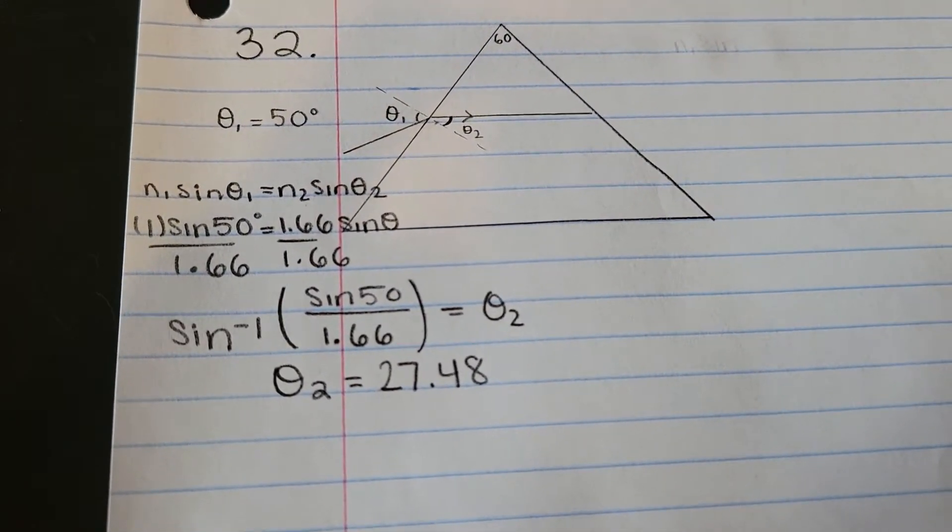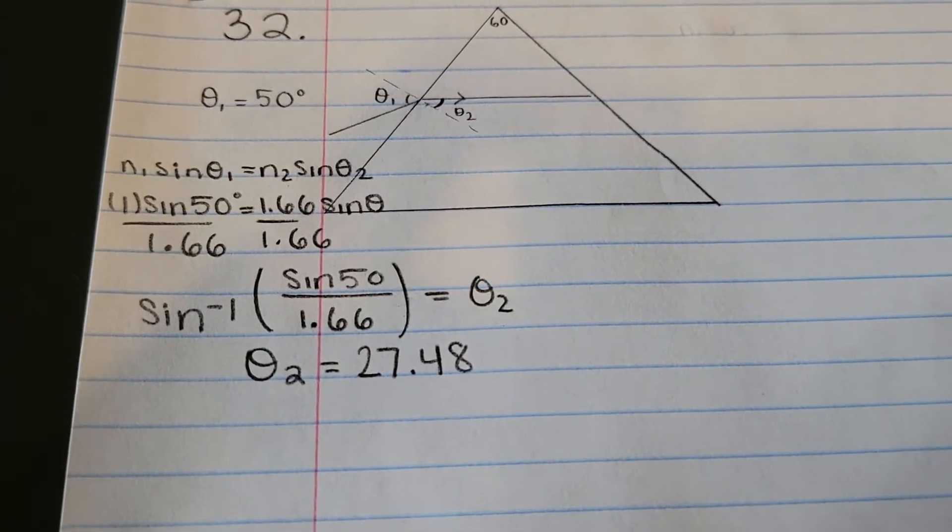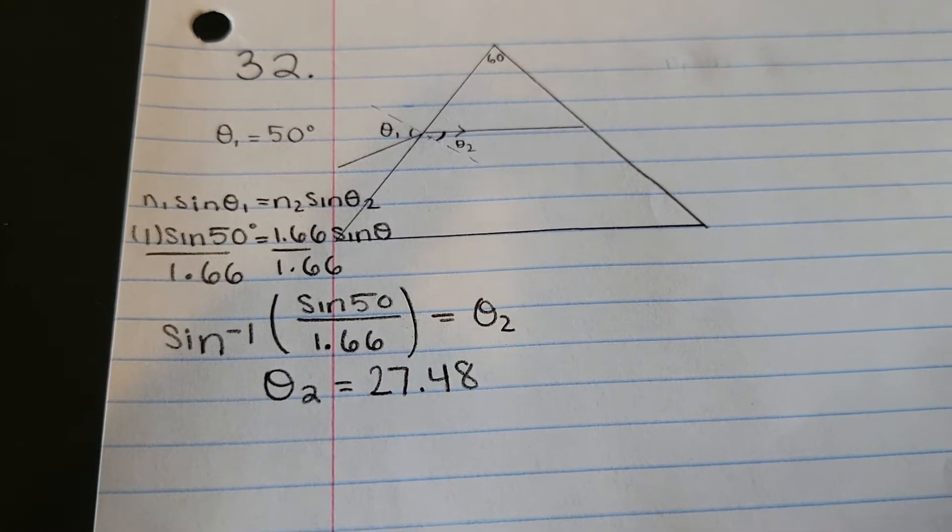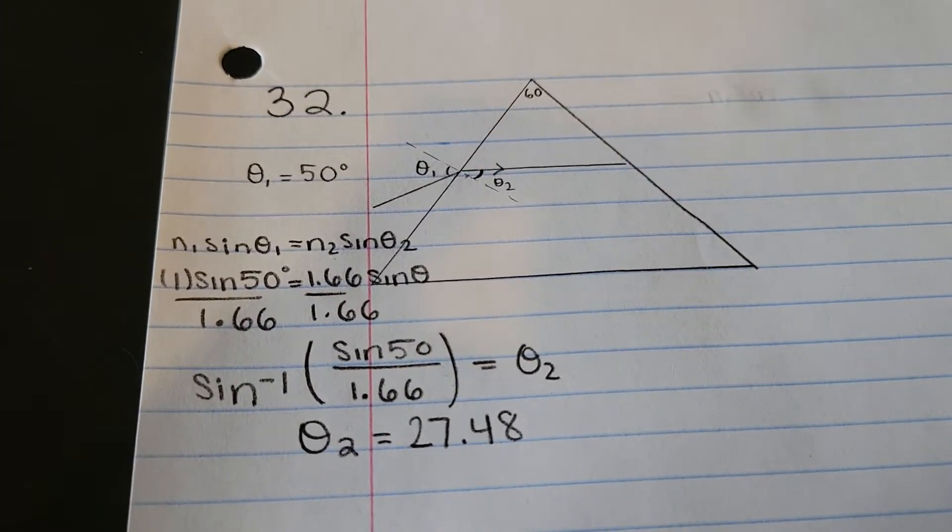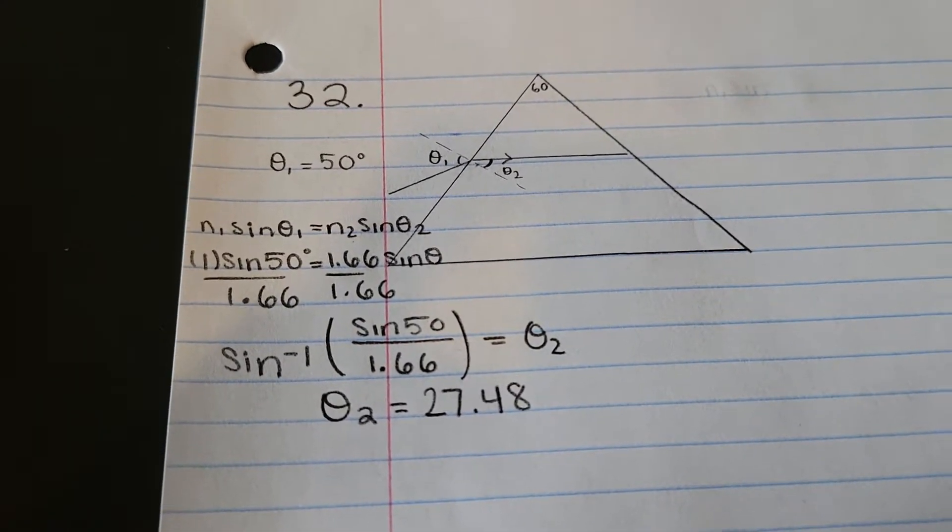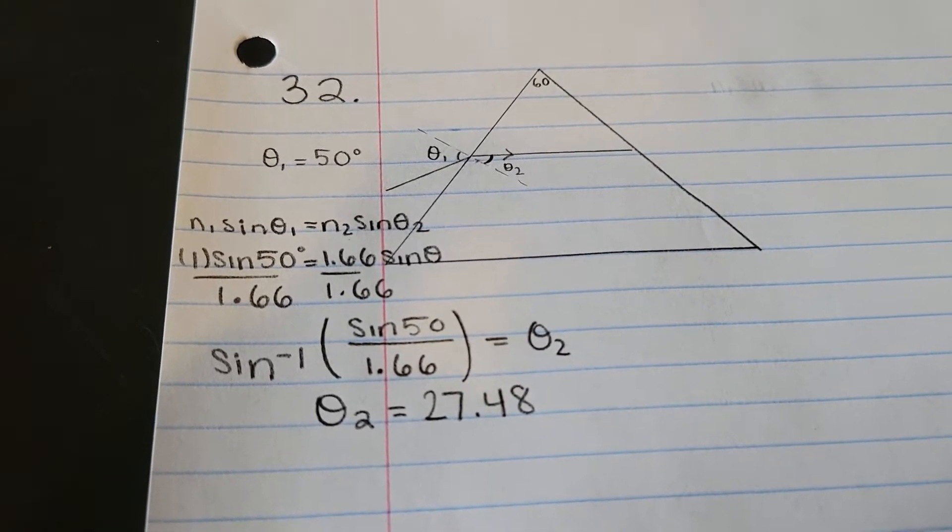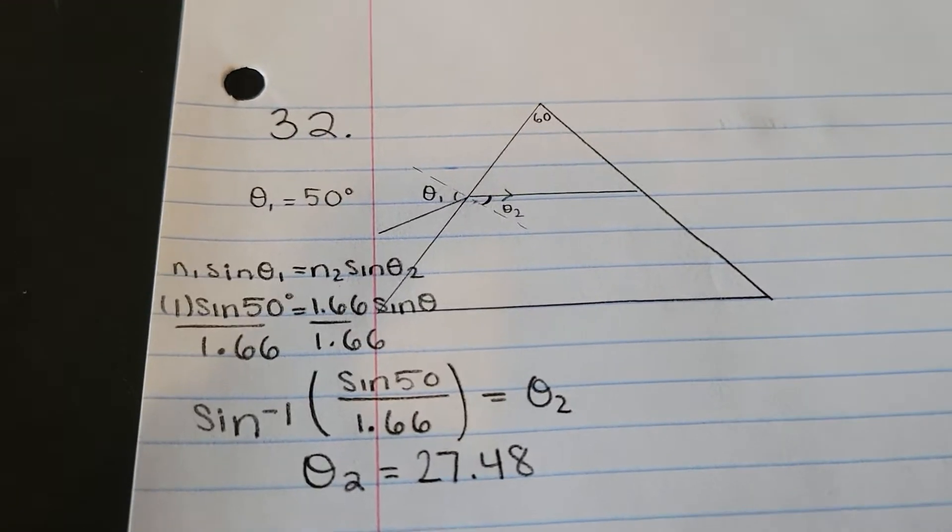Alright, so I get theta 2 to be 27.48. I'm starting off with violet first. We'll come back and do the red light after we finish the whole process for the violet. But basically, I just labeled everything out. I put it all before I punched it all in my calculator, and I got 27.48.